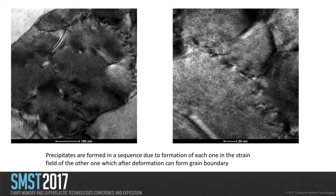Zooming in on the same grain, we can see the bright field images and the existence of these precipitates — in the left image and in the right image at higher magnification — arranged in a sequence. They form in this sequence because when the first precipitate forms, there is a strain field around it, and this strain field creates the next nucleation site. Because of that, you see the sequential formation of these precipitates.